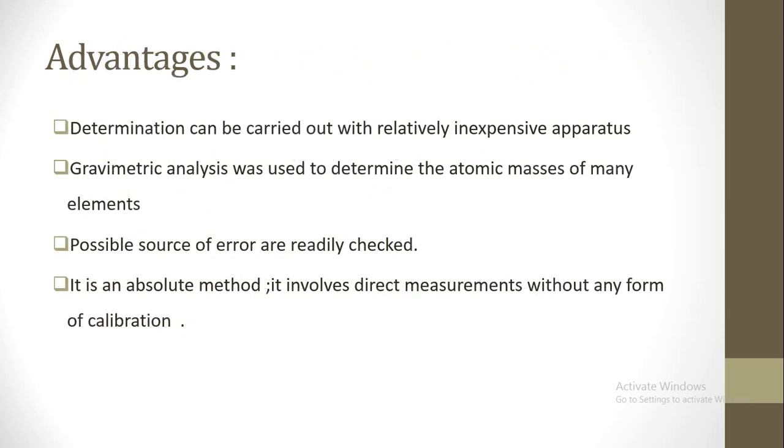Advantages: Determination can be carried out with relatively inexpensive apparatus. Gravimetric analysis was used to determine the atomic masses of many elements. Possible sources of error are readily checked. It is an absolute method; it involves direct measurements without any form of calibration.